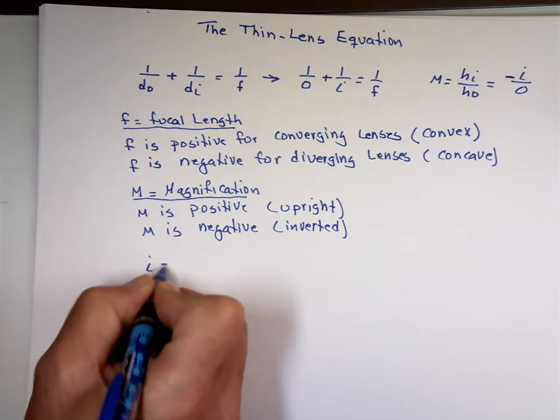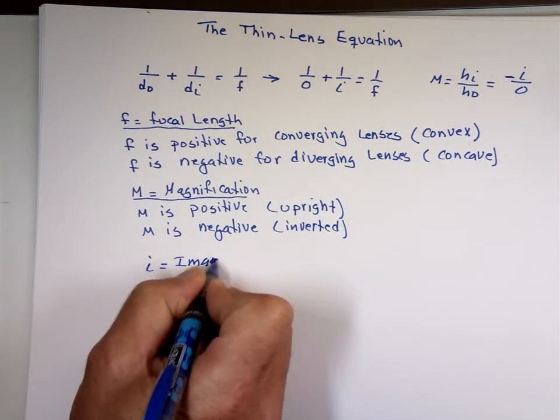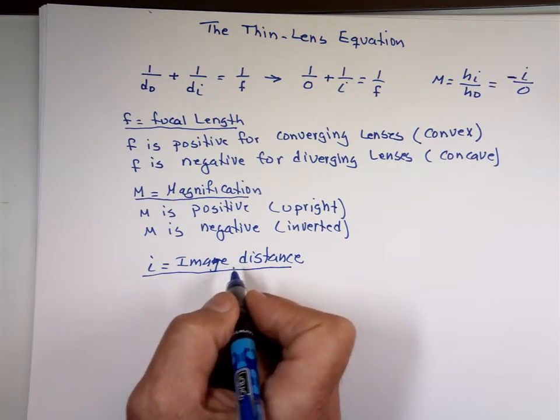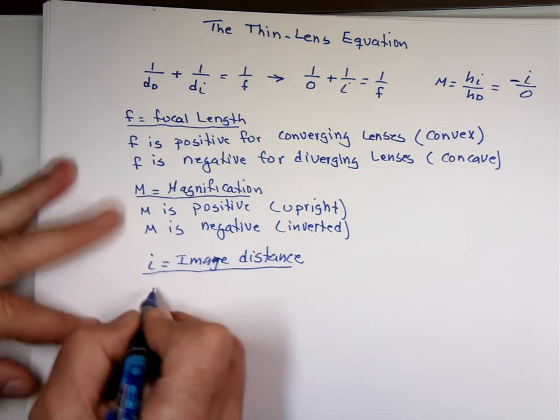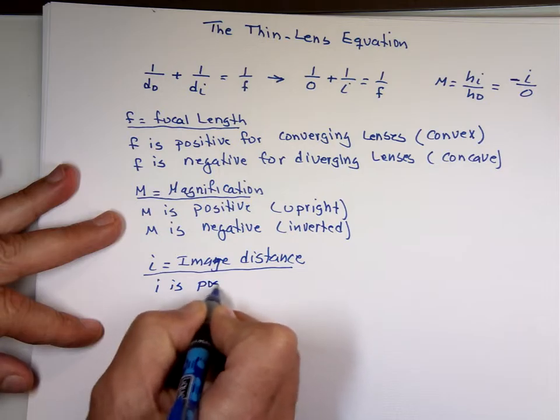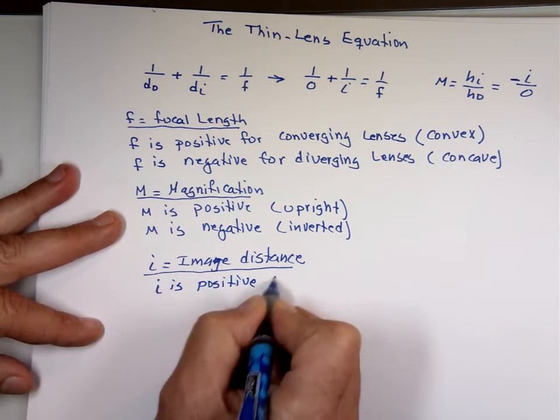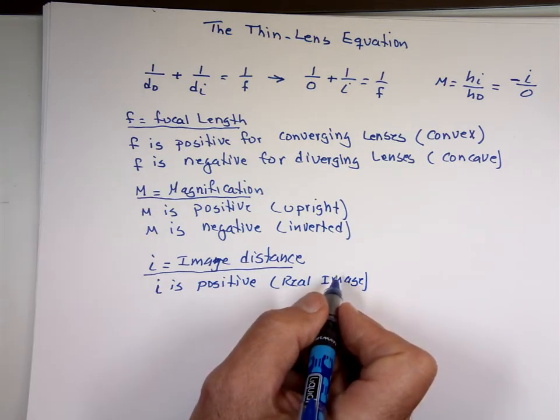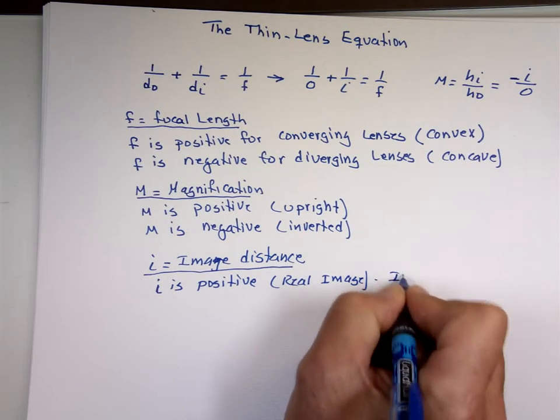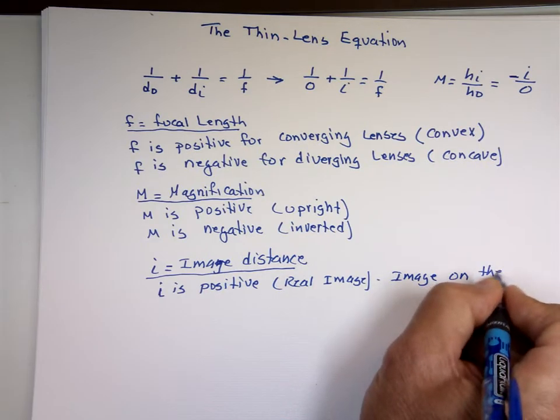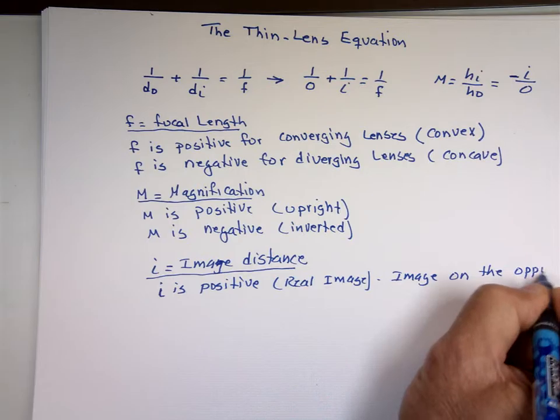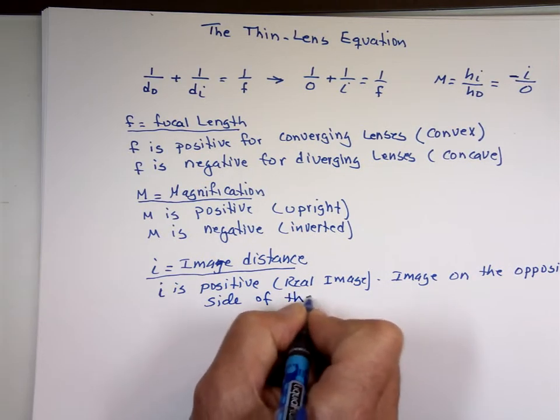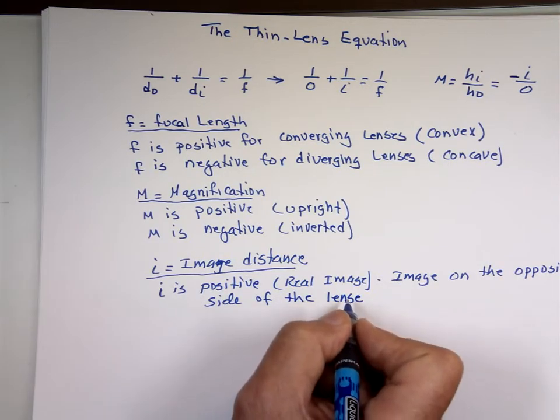Image distance, i. The image - i is positive, that means you have real image. What does real image mean? Image on the opposite side of the lens. So for example, the object on the left, the image on the right.